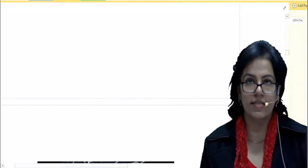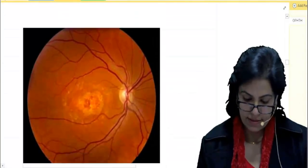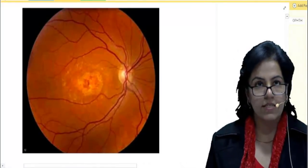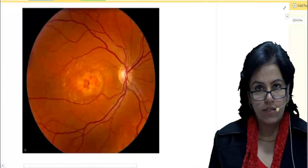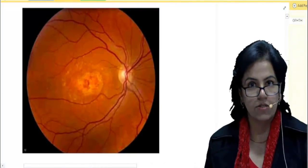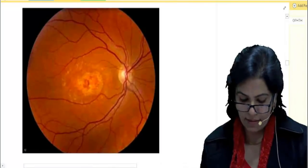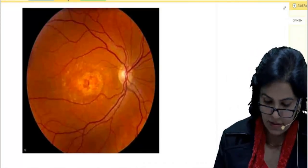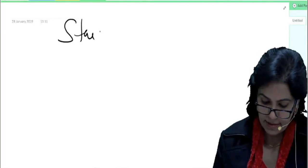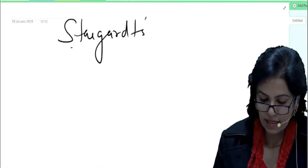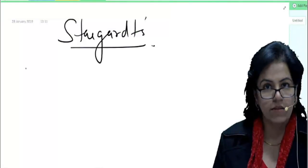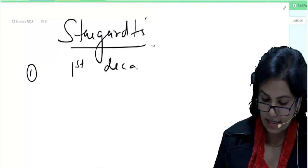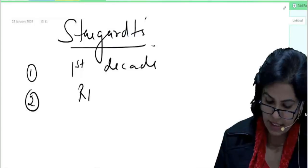Let us look at Stargardt's disease. This is your Stargardt's disease. The changes are all at the macula with dystrophy of retinal pigment epithelium. It is a dystrophy of retinal pigment epithelium. It is manifesting in childhood, that is generally in first decade.